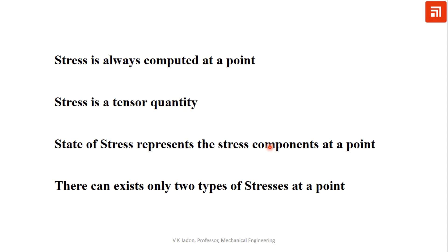The state of stress represents the stress components at a point. We can have a number of stress components at a point, depending on how many directions the stress is acting. For 3D there are six stress components, for 2D there are three stress components, and for 1D there is only one stress component.